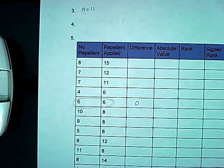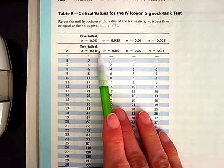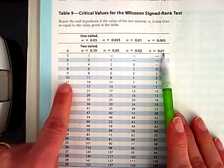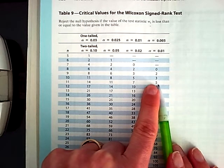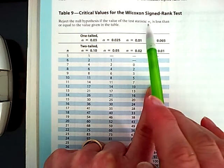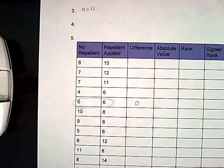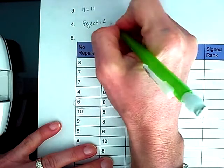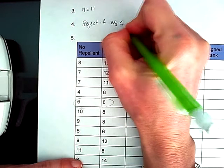So now I'm going to my table. And in my table, I'm looking at a two-tailed test. I'm looking at alpha is equal to 0.01 with a sample size of 11. So when I use that table, I'm crossing over here to find that five. The rules of this table say reject the null hypothesis if the test statistic is less than or equal to the given value. So we're going to reject if my signed rank sums are less than or equal to five.